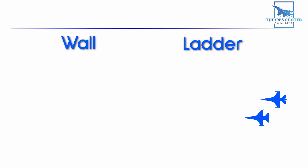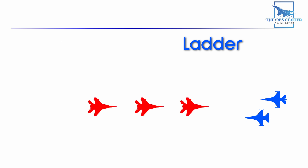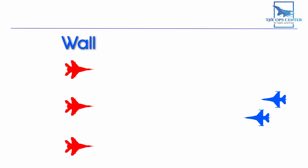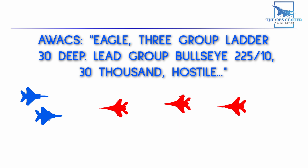Wall and Ladder are used when formations are in a line. Ladder means the line points at a friendly group, while Wall is perpendicular. In either case, the words deep or wide describe the total distance across the formation. A Ladder call might sound like: 'Eagle, three-group, Ladder, 30 deep, lead group Bullseye 225, 10, 30,000, Hostile.' This indicates the distance between the lead group and the last group is 30 miles. With a Wall, deep would be replaced with wide.